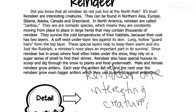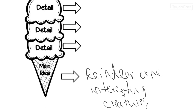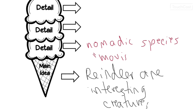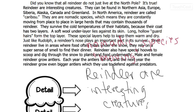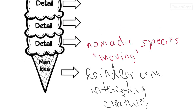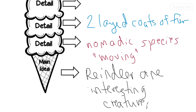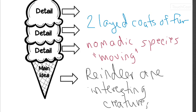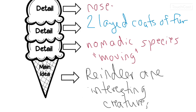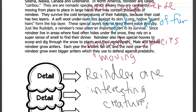Let's look at some details to prove that. What would be some details you would choose? They're a nomadic species — that's a cool one, meaning they're constantly moving. Nomadic means movement, so they don't have just one place they call home. They survive in cold temperatures — they have two-layered coats of fur. And then their nose has a super sense of smell. We could have also added the information about the antlers falling off each year, because that's a pretty interesting fact.